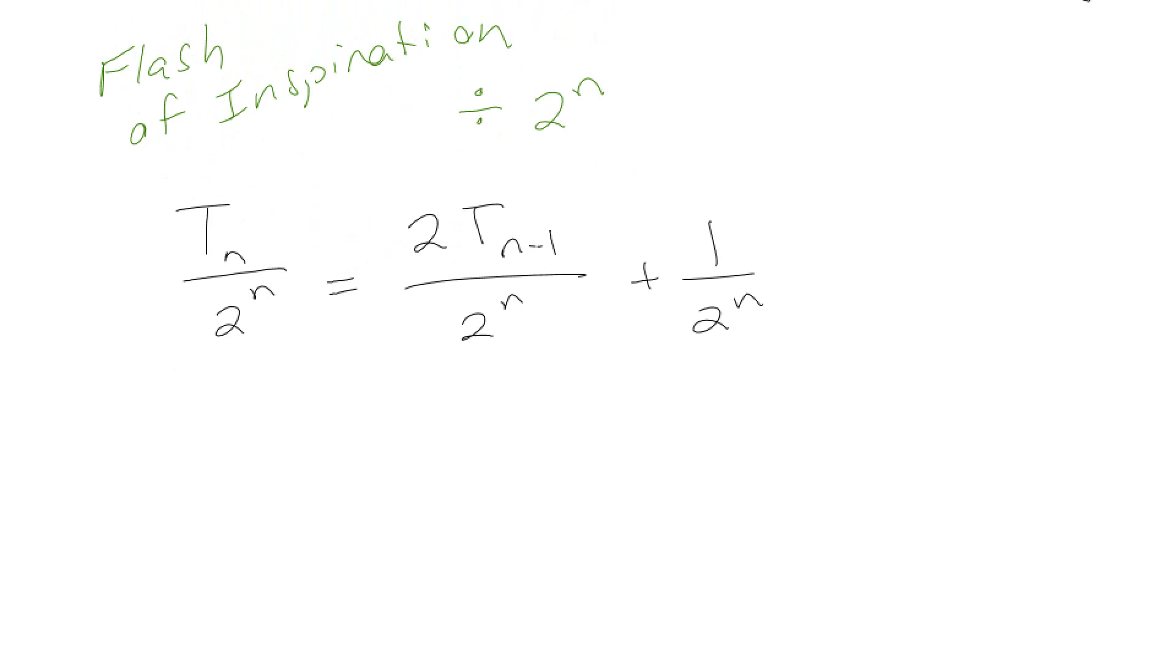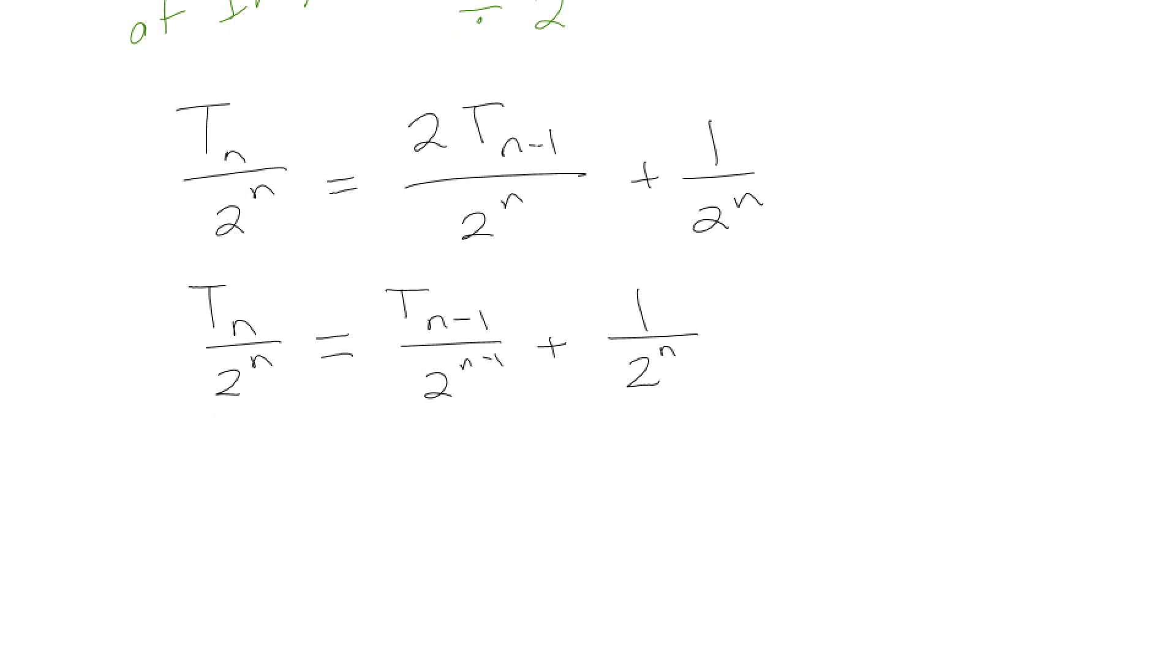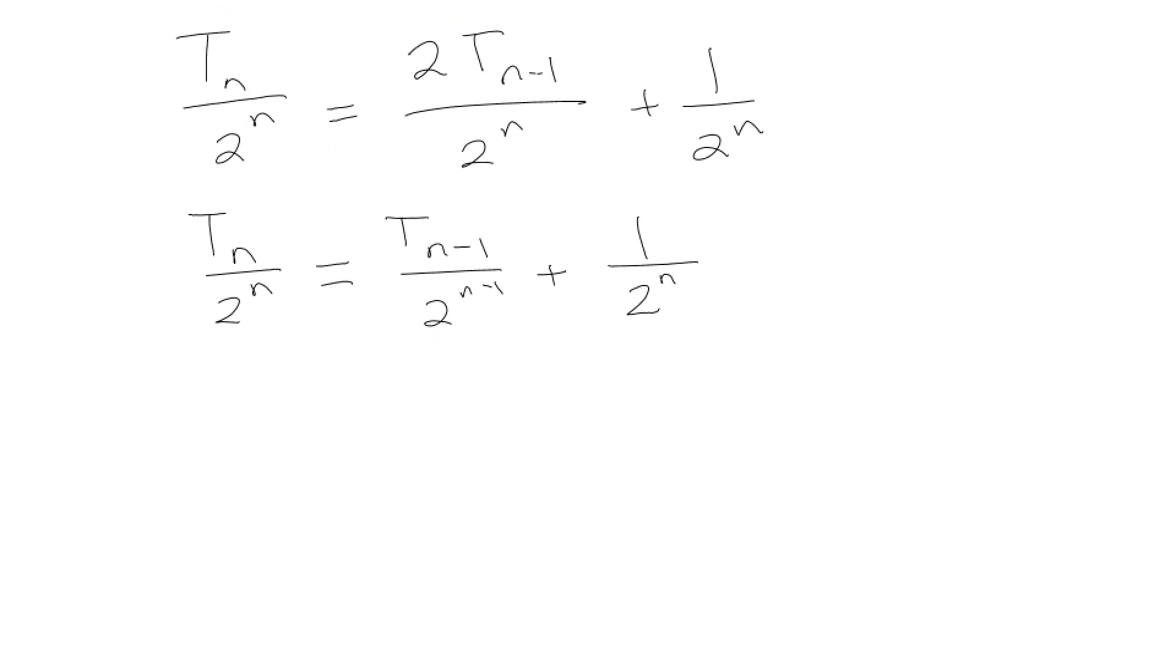So we have T_n over 2^n equals 2T_{n-1} over 2^n plus 1 over 2^n. And so basically once I simplify this, T_{n-1} over 2^{n-1}, and if you kind of know where we're going with this, you just got super duper excited because something kind of amazing happened. So if you look at the terms that we have, we have T_n over 2^n, and T_{n-1} over 2^{n-1}, which are basically the same term except the second one is the same thing as the first one, but everywhere there's an n, there's an n minus 1.